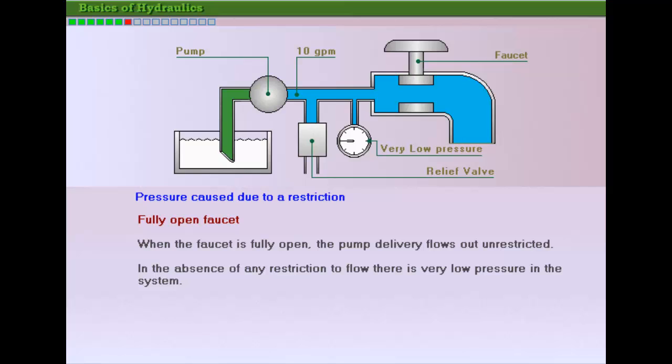Using a manually adjusted faucet, the flow is regulated by alternatively increasing and decreasing the size of the orifice. When the valve is fully opened, the pump delivery flows out unrestricted, showing that there is very low pressure in the system.